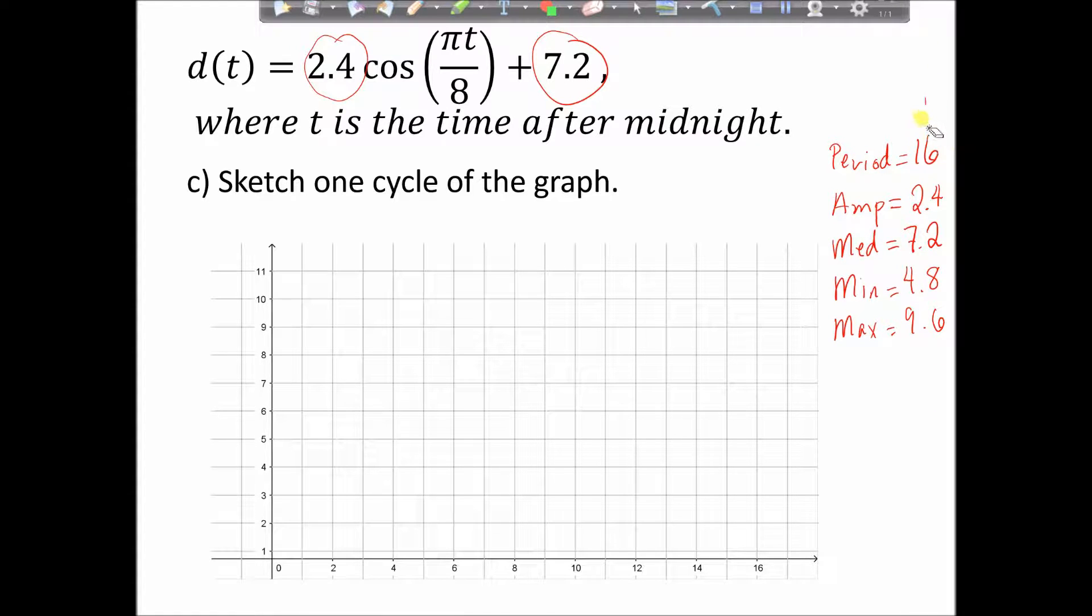Remember that if my period is 16, and I go from 0 to 16, if I chop that in half, that's 8, and then in half again, I get 4 and 12. So my key features are going to happen at 0, 4, 8, 12, and 16. So the first thing I'm going to put on is my median. So at 7.2, that's essentially my new x-axis. From there, I'm going to go ahead and start plotting my key values.